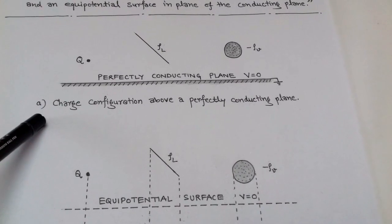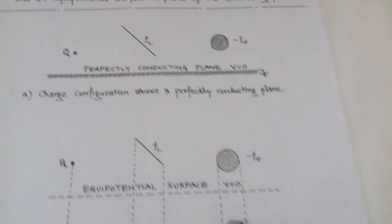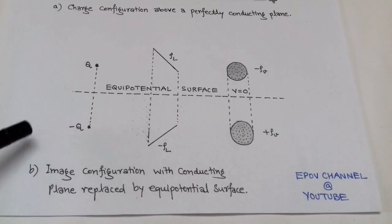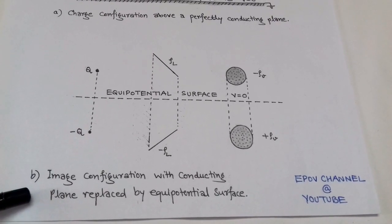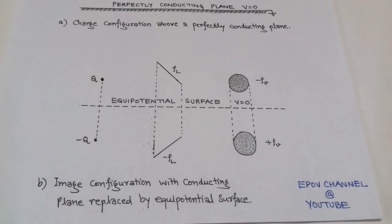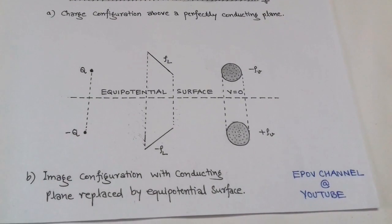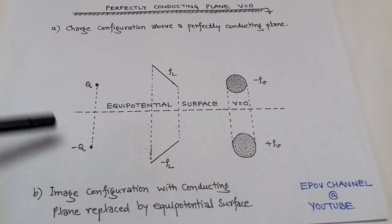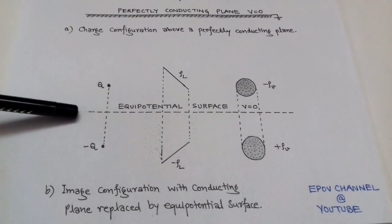Figure A shows the charge configuration above a perfectly conducting plane. After applying the method of images, Figure B shows the image configuration, where the conducting plane is replaced by an equipotential surface. With the method of images, the charge configuration has an image and the perfect conducting plane is replaced by an equipotential surface.